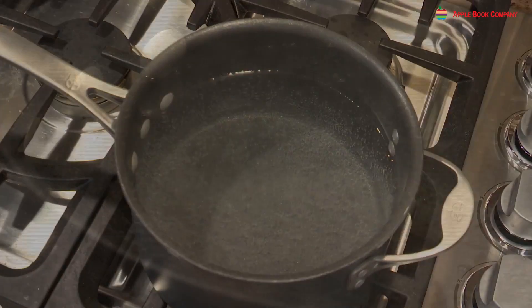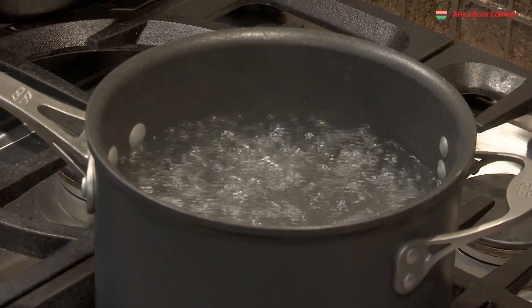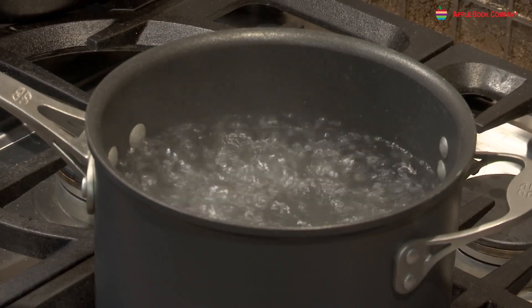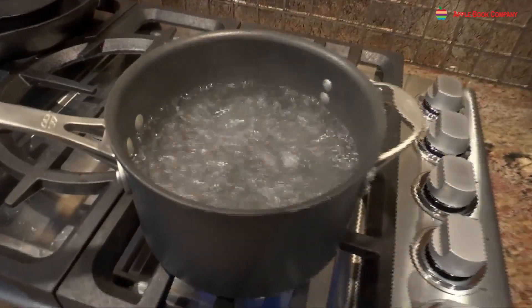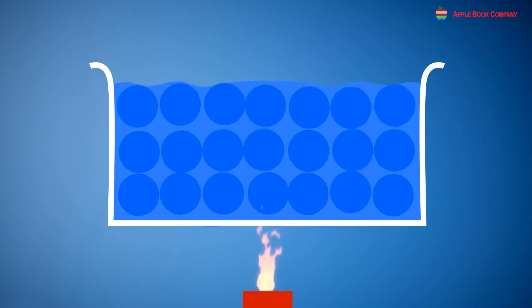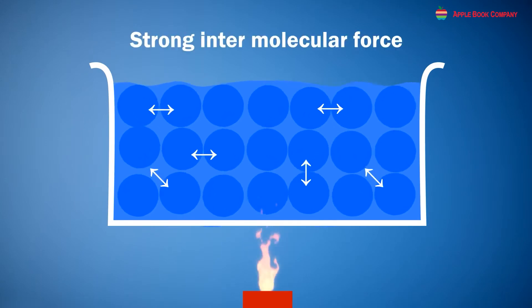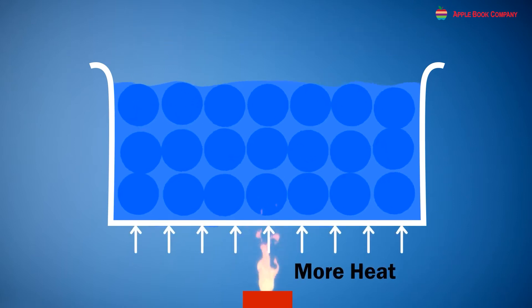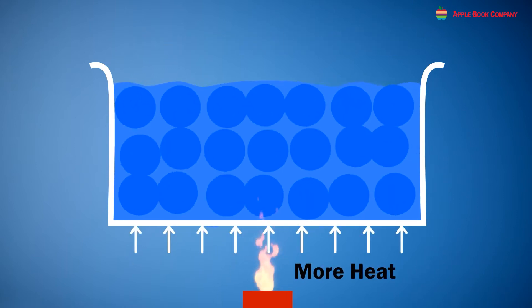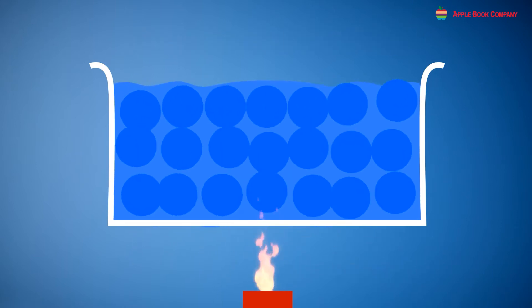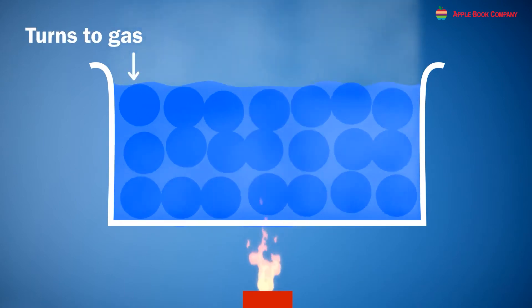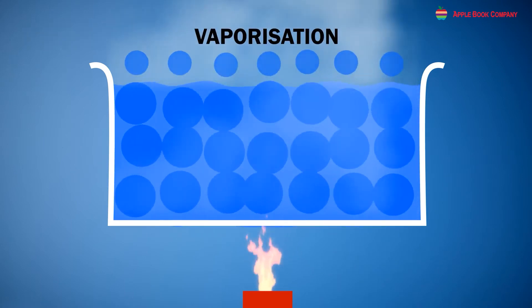Evaporation. On heating, a liquid evaporates to form a gas. Water changes into water vapor on heating. The process by which a liquid changes into its gaseous form on heating is known as evaporation. On heating, the molecules of the liquid start moving faster, and they overcome the intermolecular force of attraction and freely move out. This is how a liquid changes into vapor on heating.